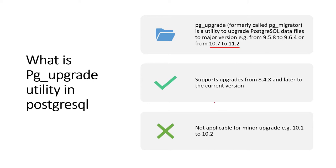pg_upgrade supports upgrades from version 8.4 and above to the latest version. The current version is 12 and 13 is the beta version. This utility is not applicable for minor version upgrades — for example, upgrading from 10.1 to 10.2 is not valid.